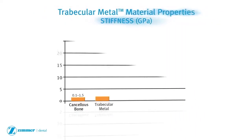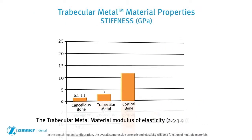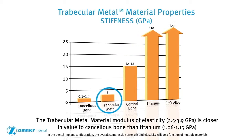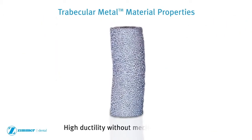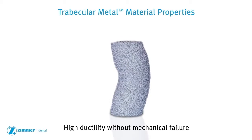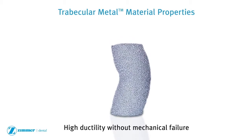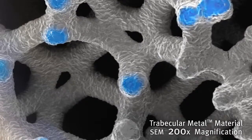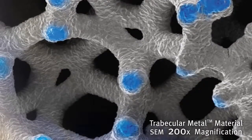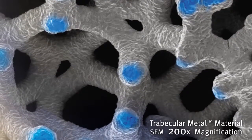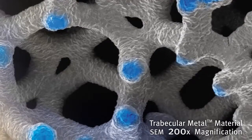Trabecular metal material has a low modulus of elasticity similar to cancellous bone. In compression testing, trabecular metal material exhibits high ductility without mechanical failure. Trabecular metal material has been demonstrated to contribute to the primary stability of the implant based on in vitro insertion torque testing.